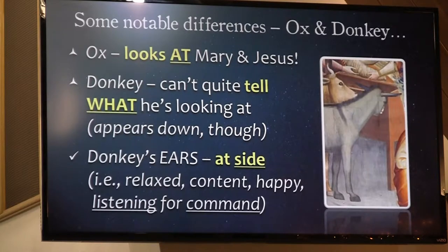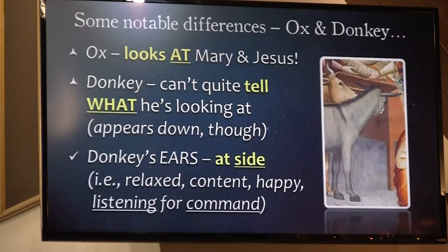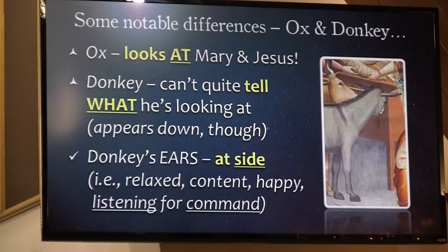The ox and the donkey are back. It's interesting because last week the ox was looking at the donkey and the donkey was looking down at Jesus. Giotto depicts them a little differently. In his depiction, the ox looks at Mary and Jesus, and the donkey — we can't quite tell what he's looking at. If we follow around his head, we can imagine he's looking down, but we can't quite figure out what he's looking at. The ox looks at Mary and Jesus.